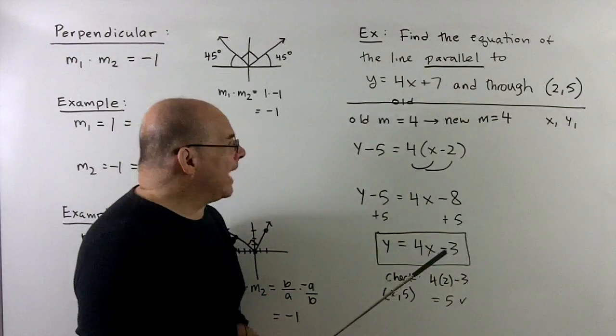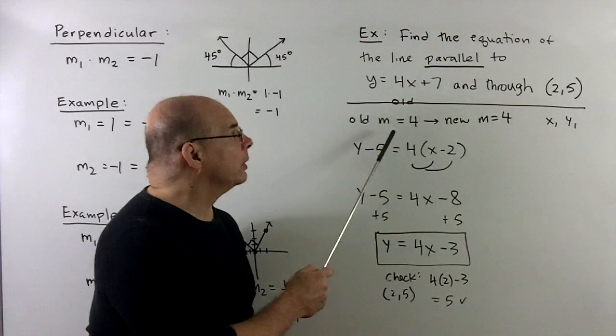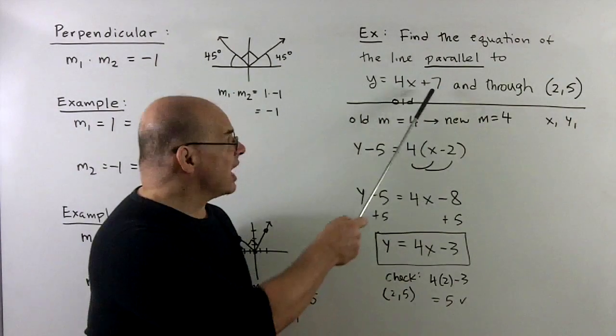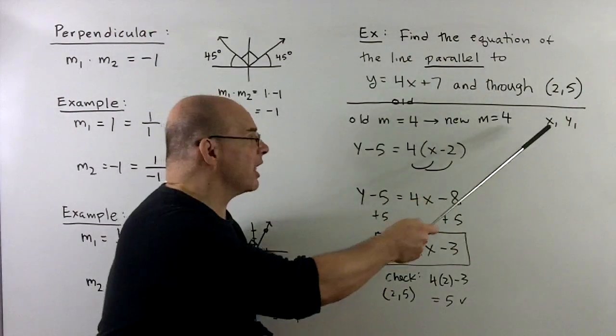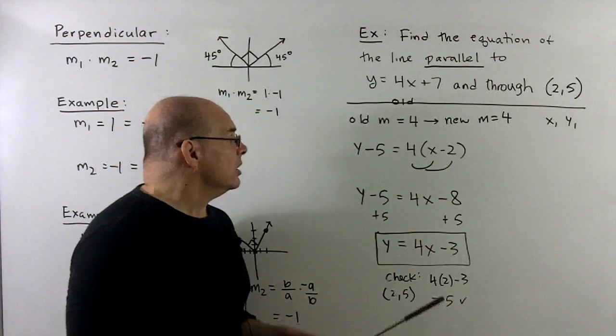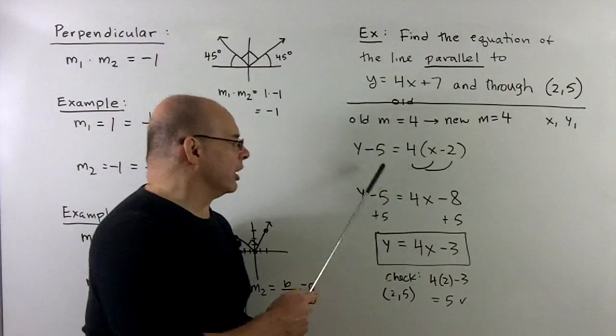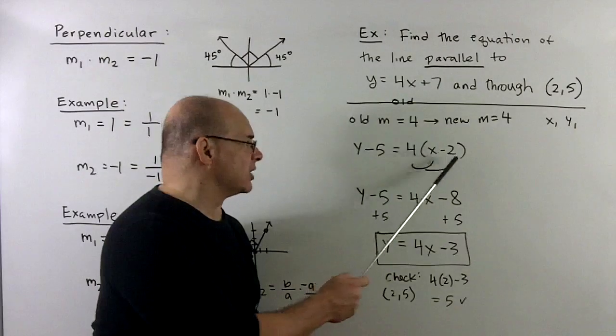So, what do we have? We have, we know the slope is 4. It's the same as the old slope. And the 7, I don't need at all. I need the new point, which is (2, 5). So, that'll be the x₁, y₁ for the point-slope equation. So, we'll have, you can just look it up if you forgot it, but y minus 5 equals 4 times parentheses x minus 2.